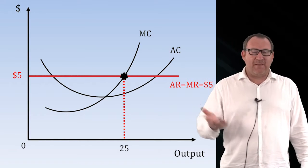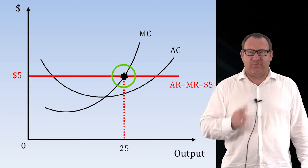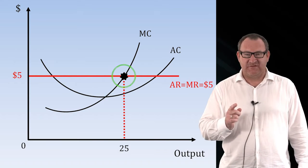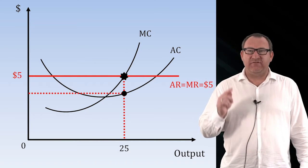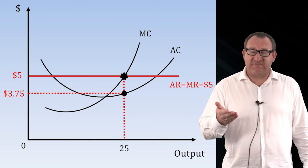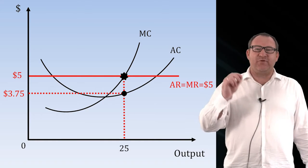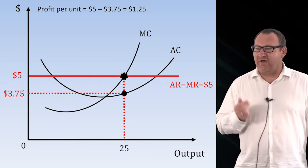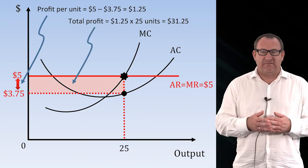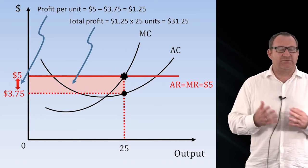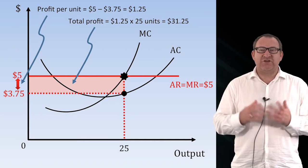So in our example we can see, given the average cost curve, that at the optimal level of output determined by the point where marginal revenue equals marginal cost, the firm's average cost of production is $3.75 per kilo. It's selling the tomatoes at $5 a kilo, the cost is $3.75 per kilo, so we can see that the profit per unit is $1.25. We simply multiply that by the number of units they're selling to get the total profit: $1.25 times 25 units gives us $31.25 total profit.